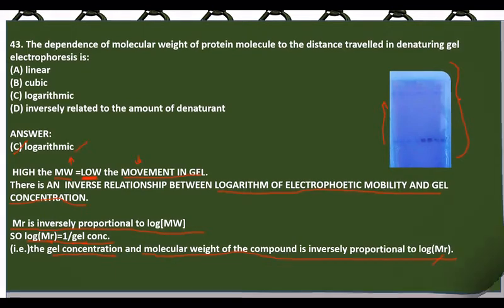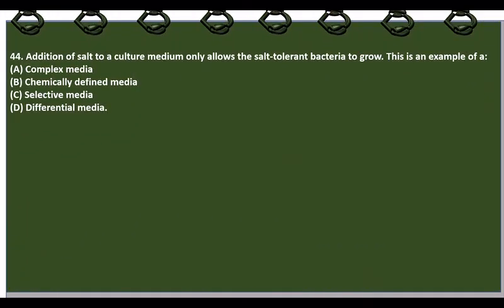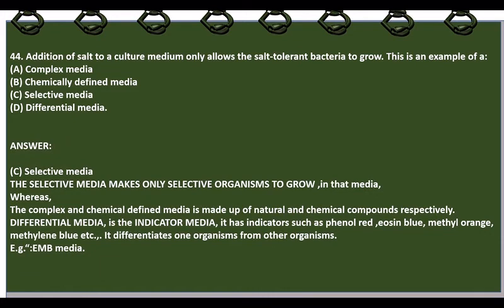Addition of salt to a culture medium that allows only salt-tolerant bacteria to grow is an example of selective media. Selective media allows only selective organisms to grow. Complex and chemically-defined media are made of natural and chemical compounds respectively. Differential media — also called indicator media — contains indicators such as phenol red, methyl orange, or methylene blue to differentiate one organism from another. For example, in EMB media, E. coli is differentiated from other bacteria.